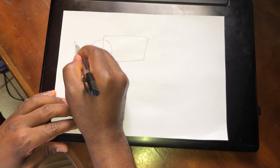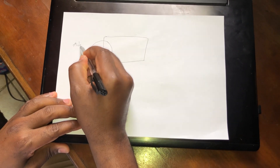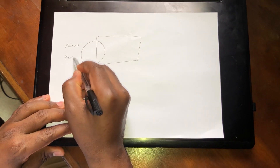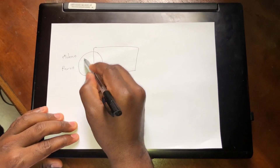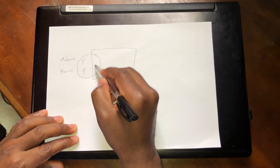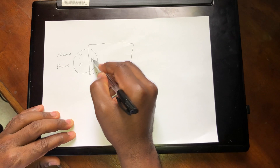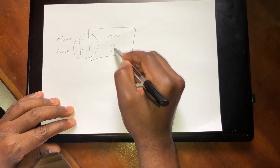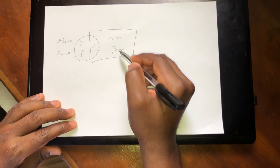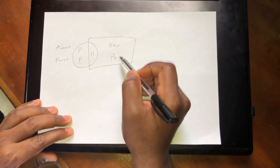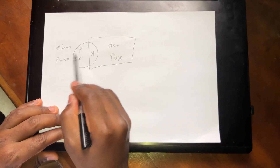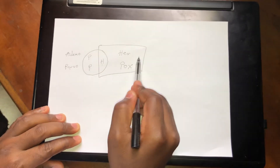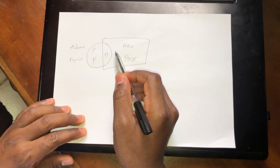So right here: Adeno, Parvo, P, P, H, Her, Pox. Just learn this — Adeno, Parvo, P, P, H, Her, Pox. These are all the DNA viruses.